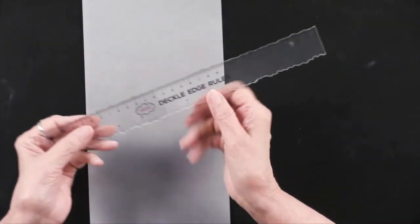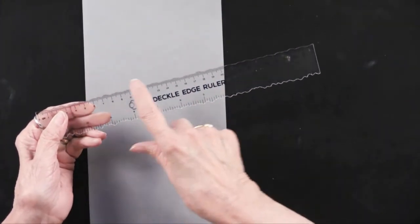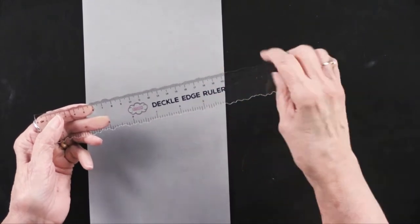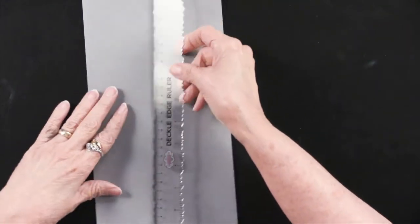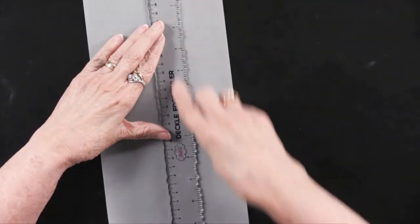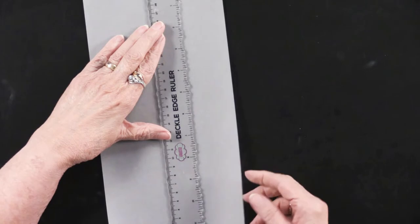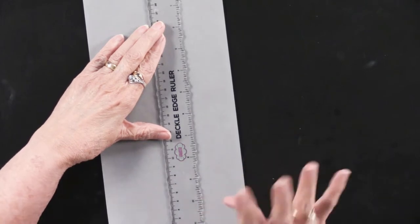So there's two sides. There's one that's kind of a gentle deckle, an uneven edge. The other one is more jagged. So let's try the jagged one first. This ruler is 12 inches long, so if you want to use it for a 12x12 scrapbook page, you are set.